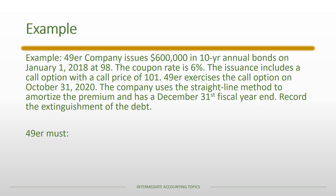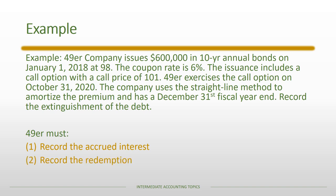There are two things that 49er must do when the debt is extinguished. First, they have to record any accrued interest. Since the extinguishment takes place on October 31st, there will be accrued interest because interest is paid on December 31st each year. Secondly, 49er has to record the redemption, which is to remove the book value of the debt along with the call price that is paid.